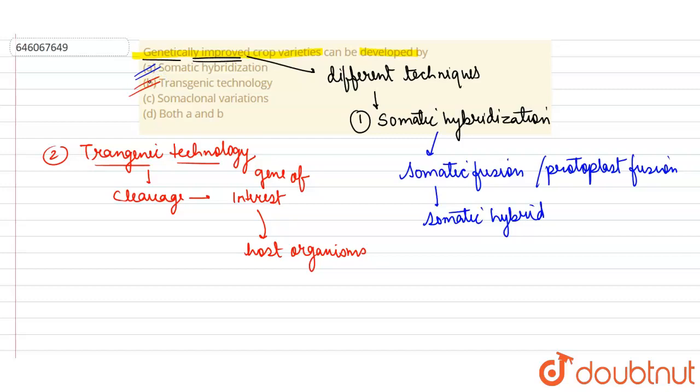We will talk about somaclonal variation. This basically also induces genetic variation, but this is not the best technique. Therefore, we can say here that option D, both A and B, will be the correct option.